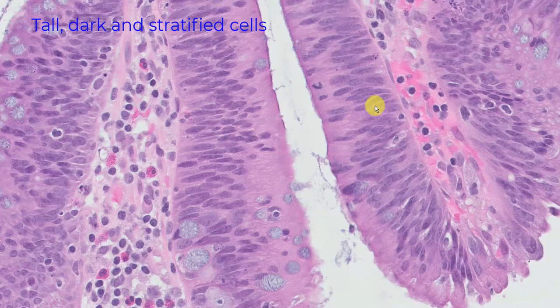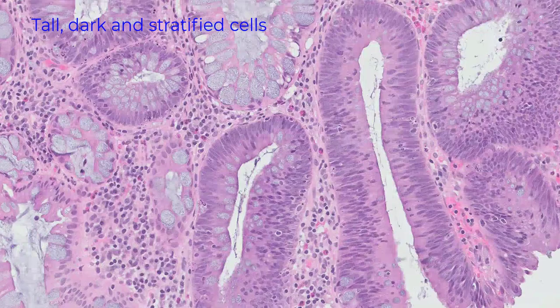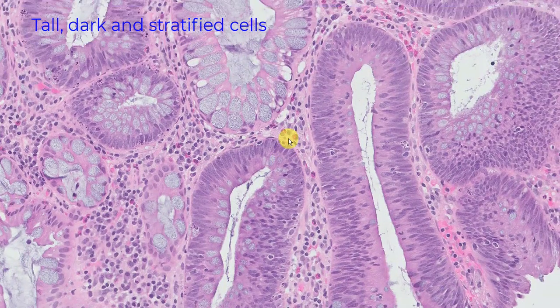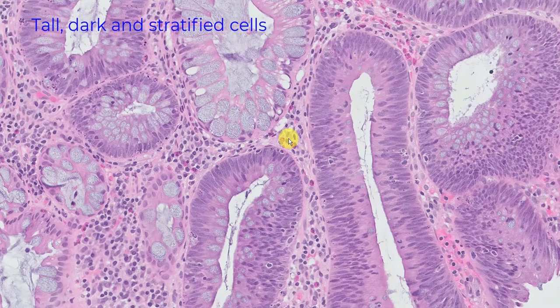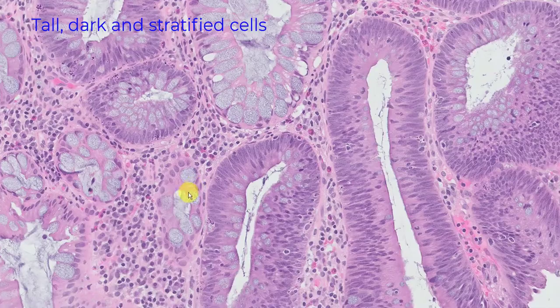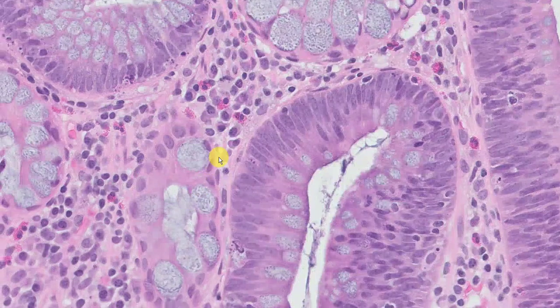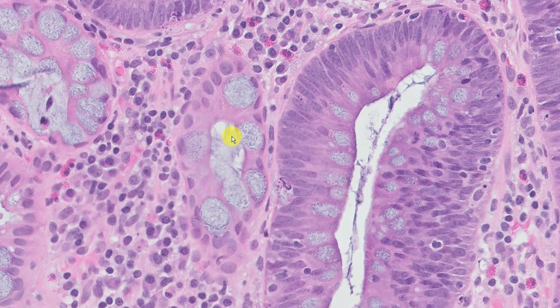Here, here, and here the cells look tall, dark, and hyperchromatic. But you have to ask yourself: tall, dark, and hyperchromatic compared to who? And the answer is tall, dark, and hyperchromatic compared to adjacent normal colonic crypts. And I promise you, you will see normal colonic crypts.